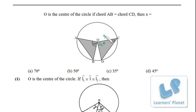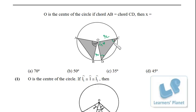Now, OC and OD are both radii of the circle, so OD equals OC. That means triangle OCD is isosceles. So the two base angles will be equal. The sum of all three angles must be 180°. If the apex angle is 70°, the sum of the two base angles must be 110°. Since both are equal, each one must be 55°. There is a mistake in the options — it must be 55°.